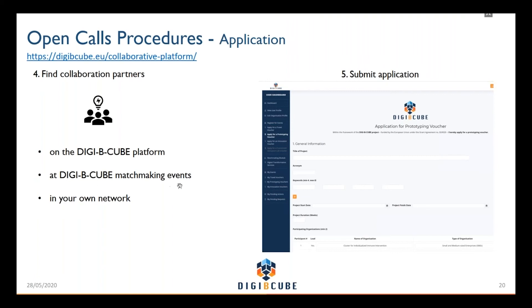Another option, as already mentioned, are the DGB Cube matchmaking events. And of course, maybe you already have collaboration partners in your own network which you want to form a subconsortium with to submit an application.